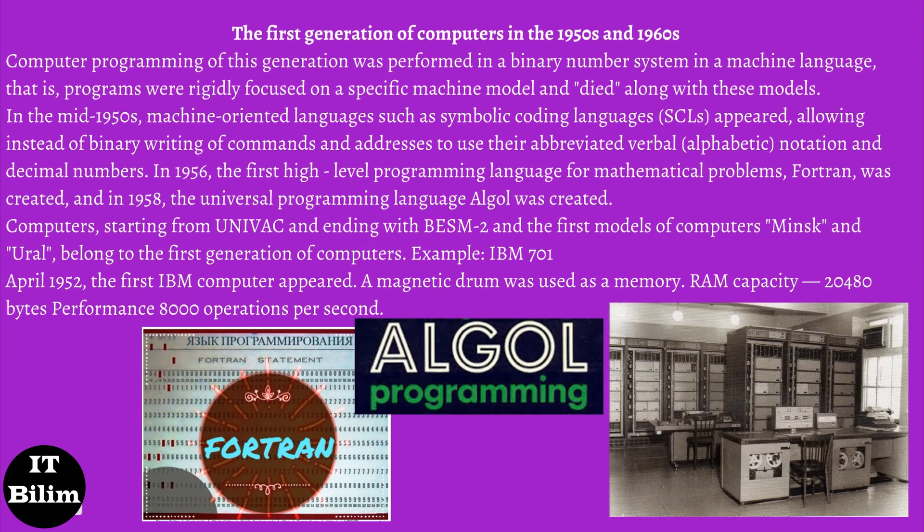In the mid-1950s, machine-oriented languages such as symbolic coding languages appeared, allowing instead of binary writing of commands and addresses to use their abbreviated verbal, alphabetic notation and decimal numbers. In 1956, the first high-level programming language for mathematical problems, Fortran, was created, and in 1958, the universal programming language ALGOL was created.